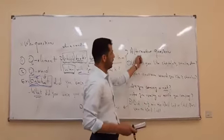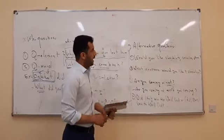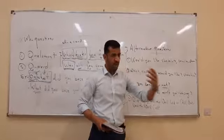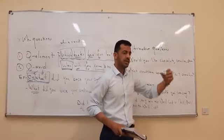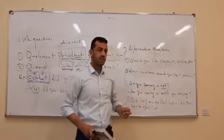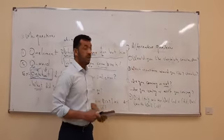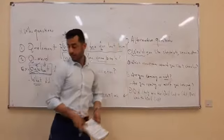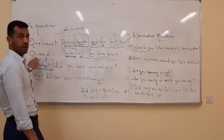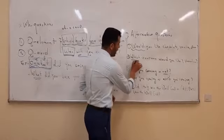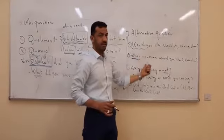Another type of question is alternative questions. Alternative questions means we have alternatives — we have choices within the question itself. You ask the listener about something, but at the same time you give them choices, and the listener can choose one of them. This type of question is divided into two types: the first we call yes-no alternative questions, because the question begins with an operator. The second type is WH alternative questions, meaning the question starts with a WH word.